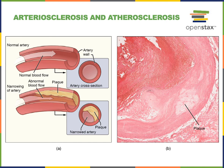A variety of things could cause damage to the endothelium. Exposure to toxins is one of them. For example, we've learned that smoking tobacco increases the risk of atherosclerosis, as the toxic chemicals from inhaled smoke can damage the endothelium, initiating this process of atherosclerotic plaque formation.